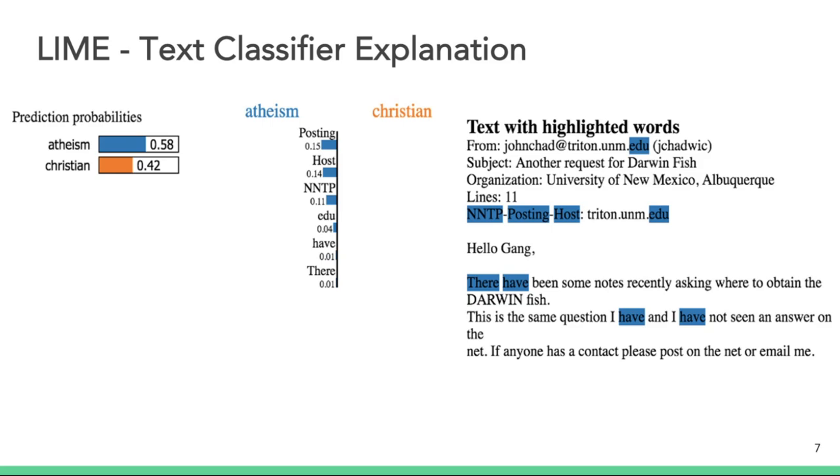This example shows that the classifier was not training to words that were related to the main concepts being examined; rather it was training to noise. So text with EDU or NTP has been used to identify that this text was discussing atheism. This is clearly a biased classifier that is overfitting to noise, which also means it would not generalize well to new examples.